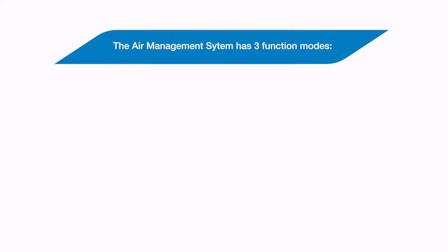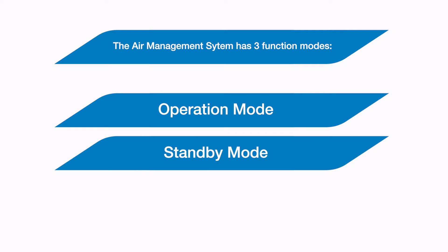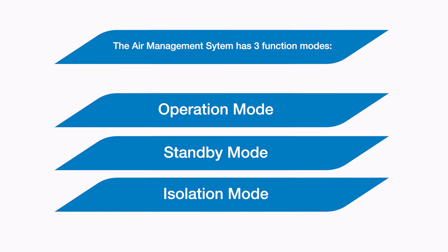The air management system has three function modes. Operation mode is when your machine is working normally as if the air management system were not fitted at all. Standby mode controls the air at a lower pressure for when your production has stopped and the machine is in an idle condition. And finally, isolation mode, which allows you to isolate and exhaust the downstream pressure if you want to.